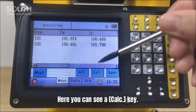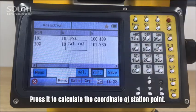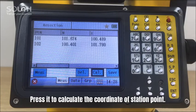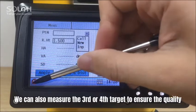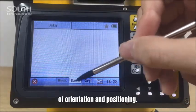Here you can see the calculate key. Press it to calculate the coordinate of station point. We can also measure the third target, fourth target to ensure the quality of orientation and positioning.